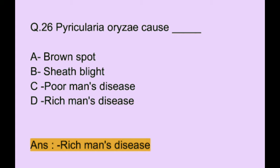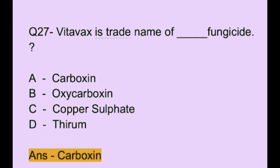Question number 26. Pyricularia oryzae causes: Option A: brown spot. Option B: sheath blight. Option C: poor man's disease. Option D: rich man's disease. The correct answer is option A, which is brown spot.